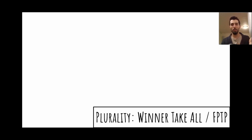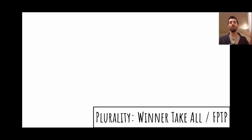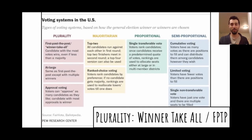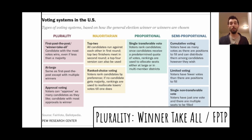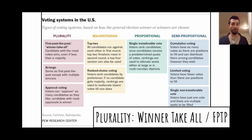Moving a little further into the weeds, we have different models of how a winner of a vote is decided. The dominant model that United States elections use, from president to local elections, is called plurality — or more specifically winner-take-all, or sometimes first past the post. A really popular alternative right now is called ranked choice voting. It's a really great model in a lot of ways. Now that we know how voting works in this country, we're going to allow the people with green voter IDs to come on up and vote.